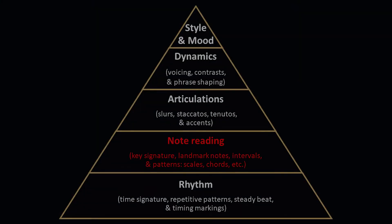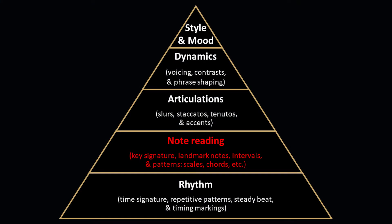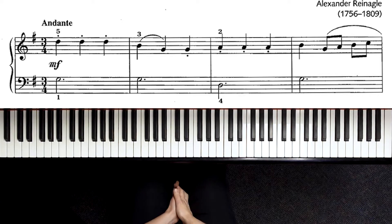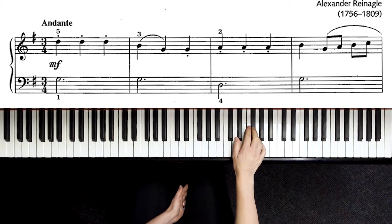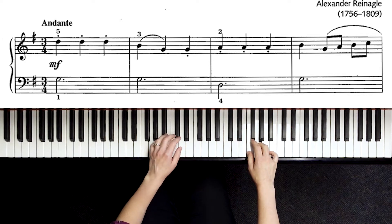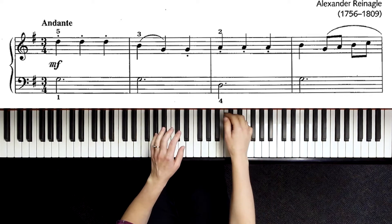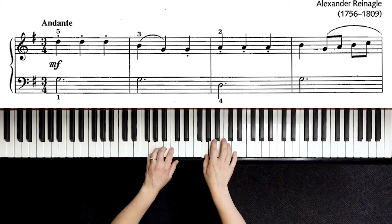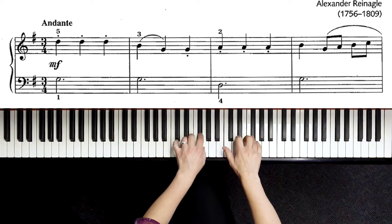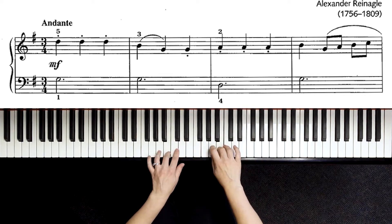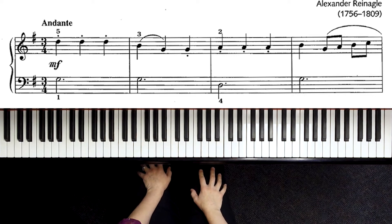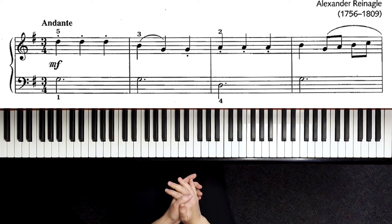We're going to move up into the note reading category. Looking at our key signature, I see 1 sharp. If I go up one half step from the F-sharp, I'm in the key of G major. You could warm up on your G 5-finger scale or G pentatonic scales. You can check out how to play those in another video.